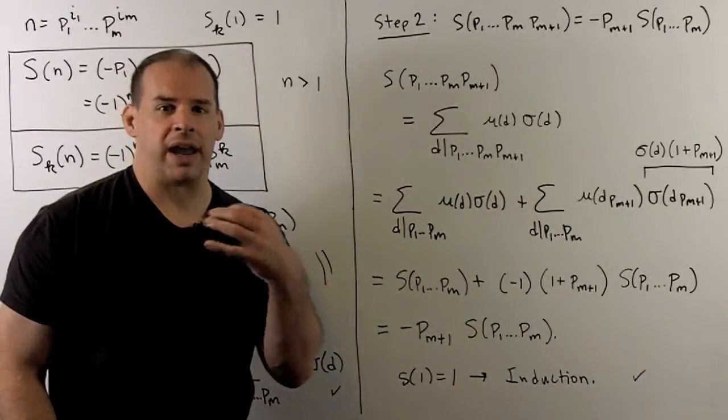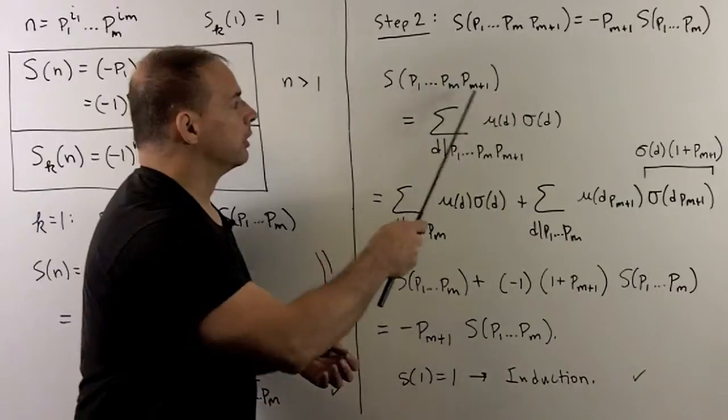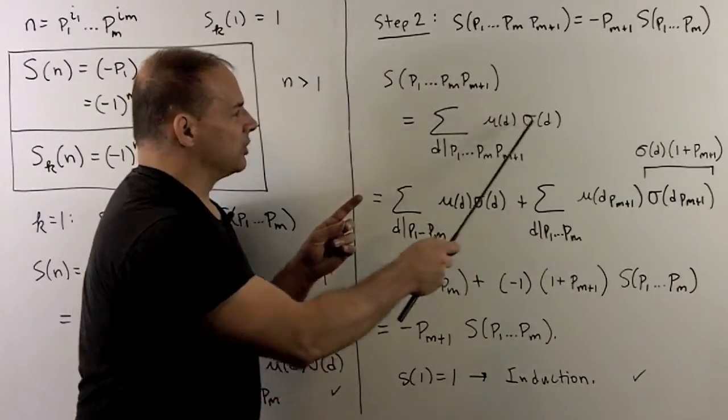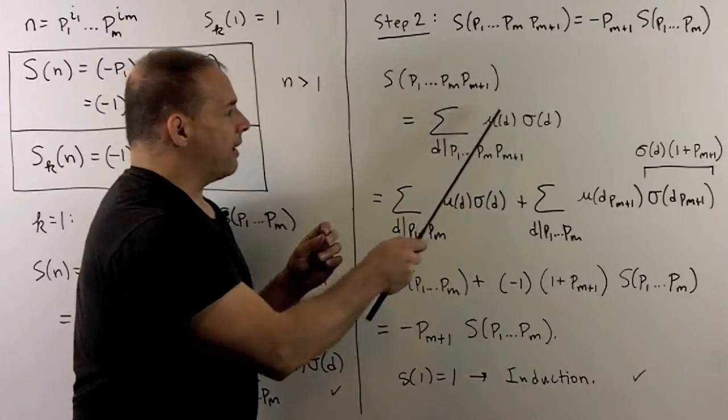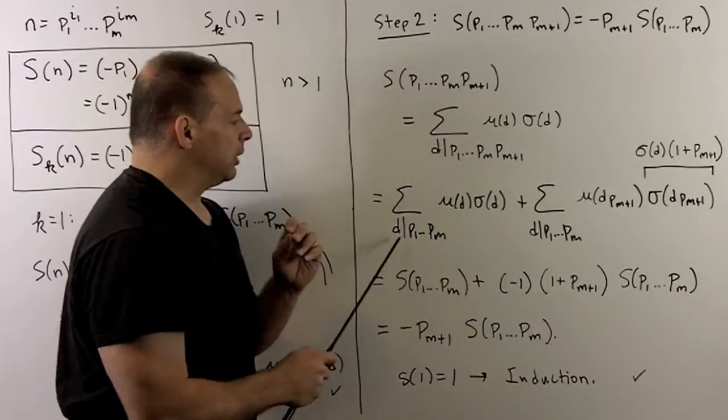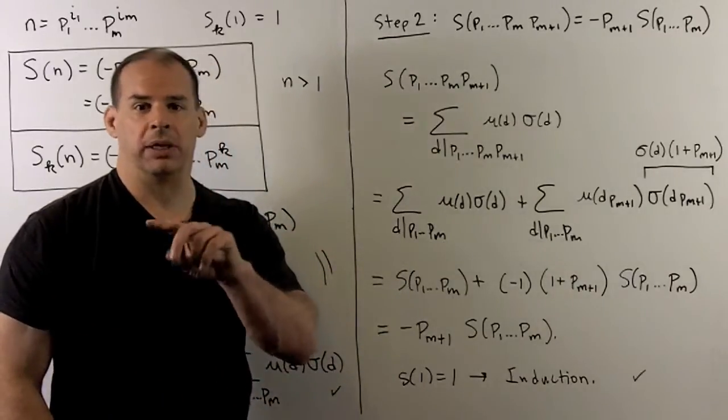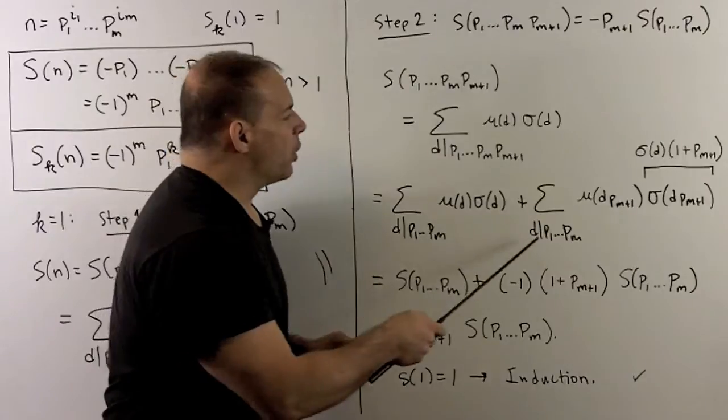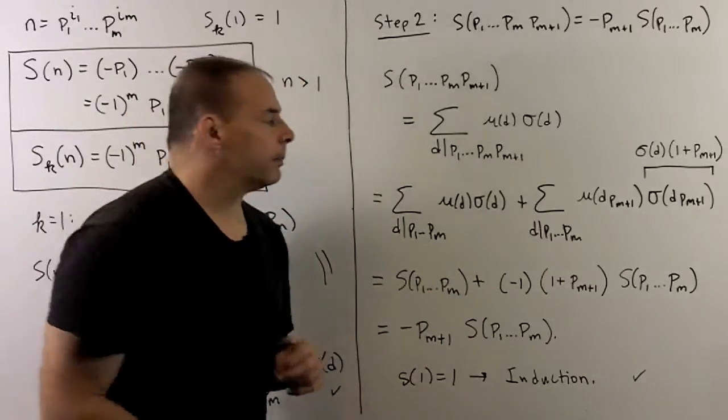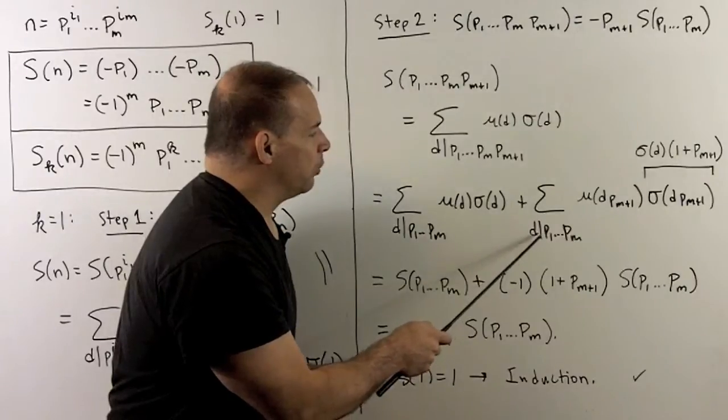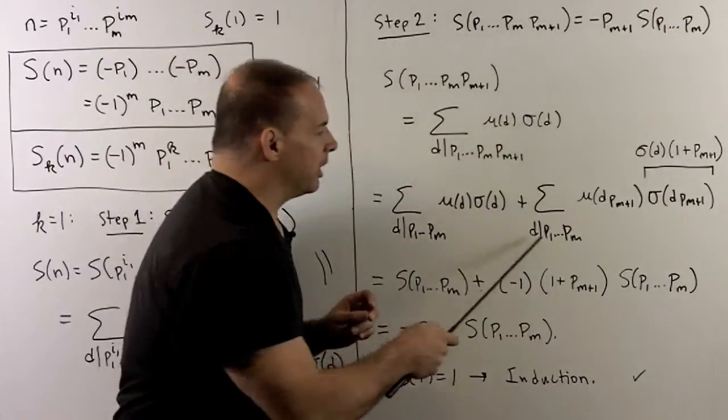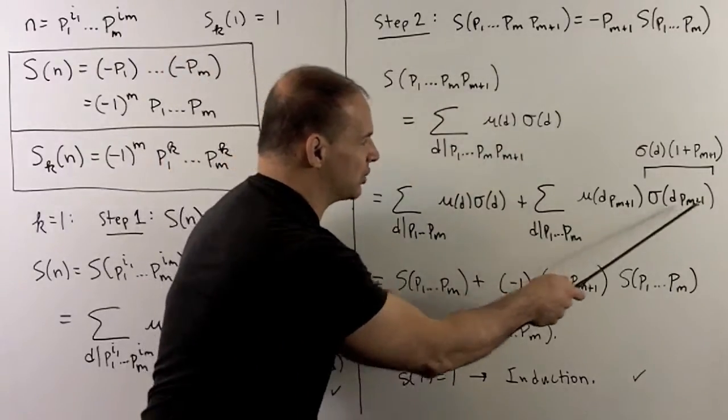Again, we're just going to write out the definition. Now here what I can do is break this up into two sums. We'll have the divisors that just divide p1 through pn, so there's no pn plus 1 factor. Then we'll have those that have a pn plus 1 factor. I'm only going to consider divisors of p1 through pn. We're guaranteeing a pn plus 1 factor, so I don't have to put it in here. I'm just going to put it in each of these terms.